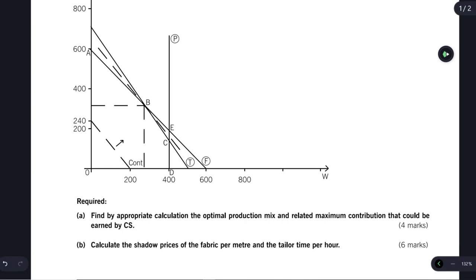I'm back in the past exam question. I'm looking at the requirement for part B. Calculate the shadow prices of fabric per meter and tailor time per hour. So, the shadow price. We're going to do tailor time. If the tailors give us one more hour of work, how much additional contribution will we earn with that one hour? That's shadow price. Let's jump into it. Let's recap what all of these numbers are all about. Then we'll make quick work of it.